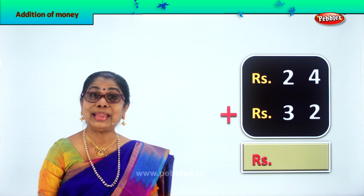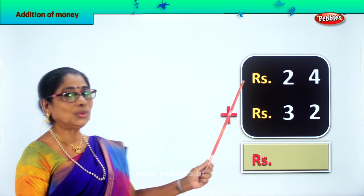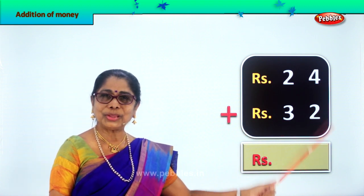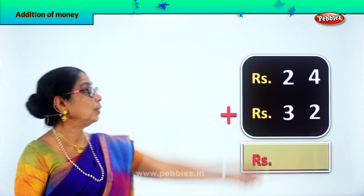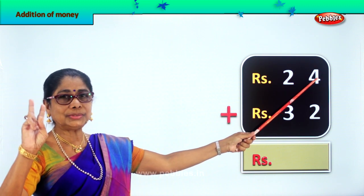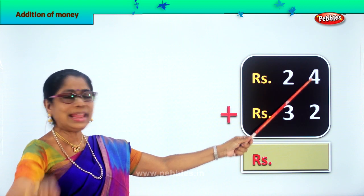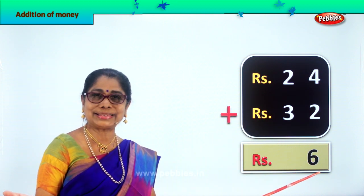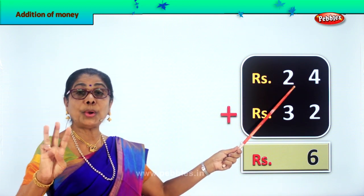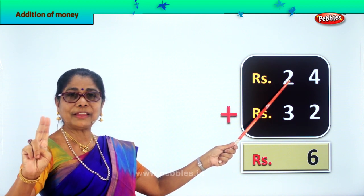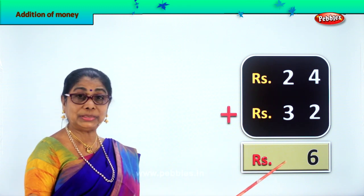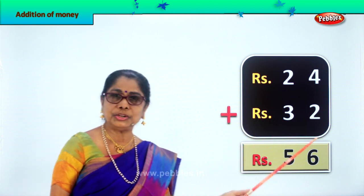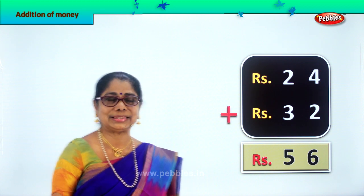Let's take another sum and enjoy doing addition of money. You are given rupees 24 plus rupees 32. Let's go to the ones place. 4 plus 2 is 6. So we write 6 here. Then the tens place: 2 plus 3. 2 plus 3 makes 5. So we write 5 here. 24 rupees plus 32 rupees is equal to 56 rupees. You write the abbreviation RS for rupees.